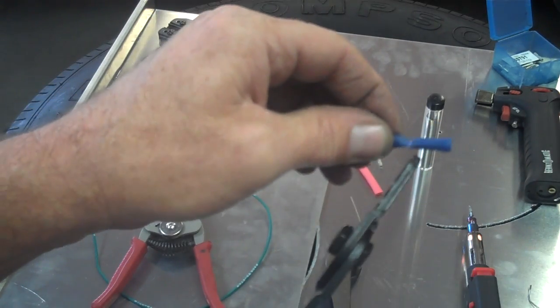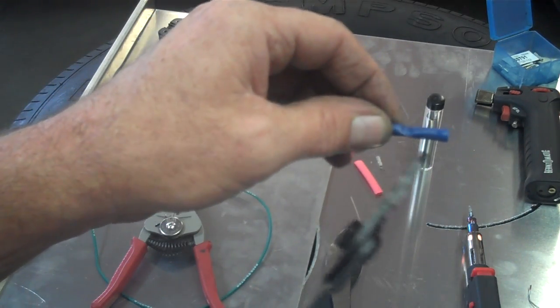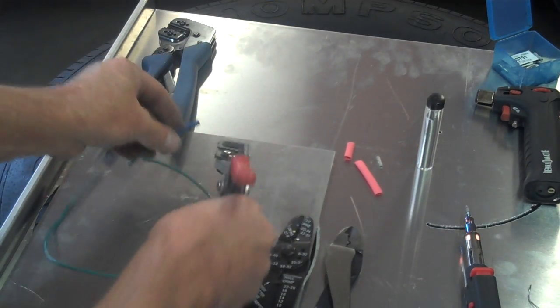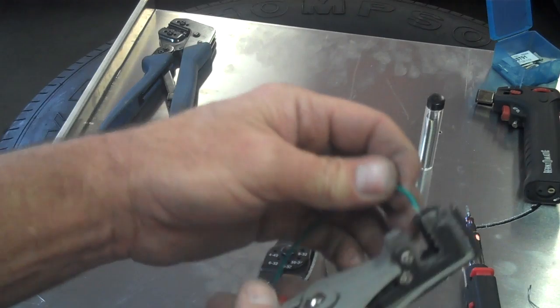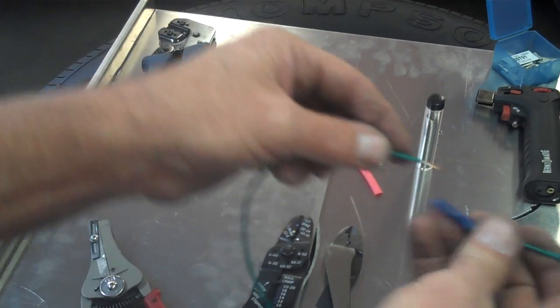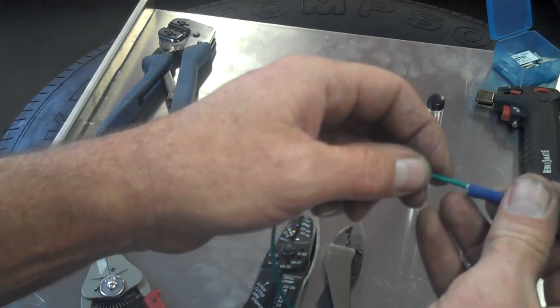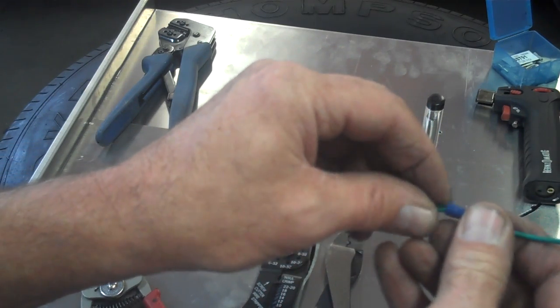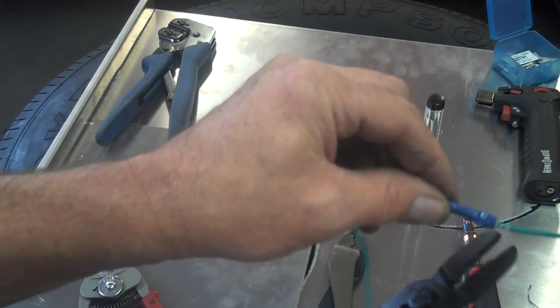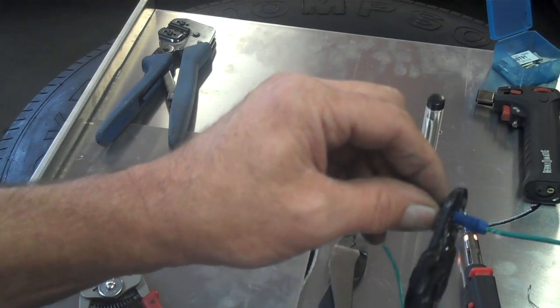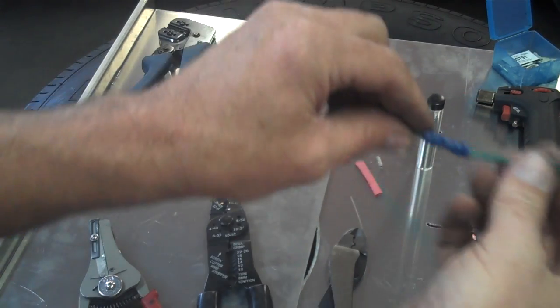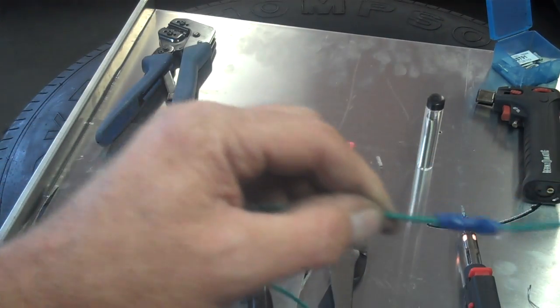Now you can see how it's crushed down on the wire. That looks pretty good. Strip another section of wire here and insert that into the butt connector. Same thing, give it a little squeeze. So there's your basic butt terminal connector.